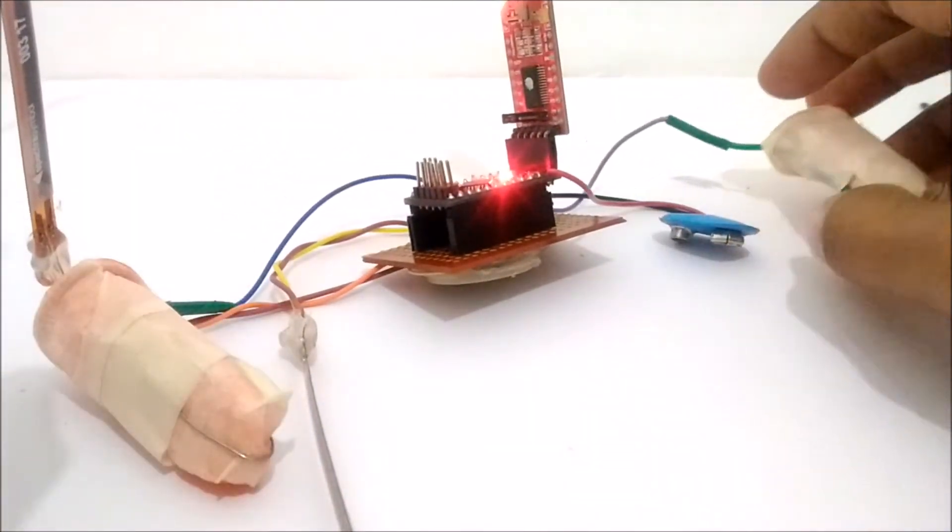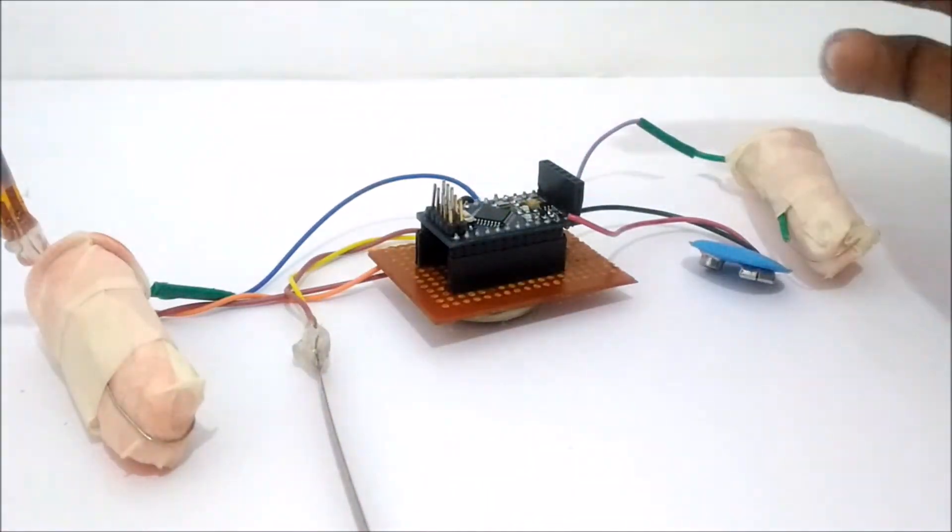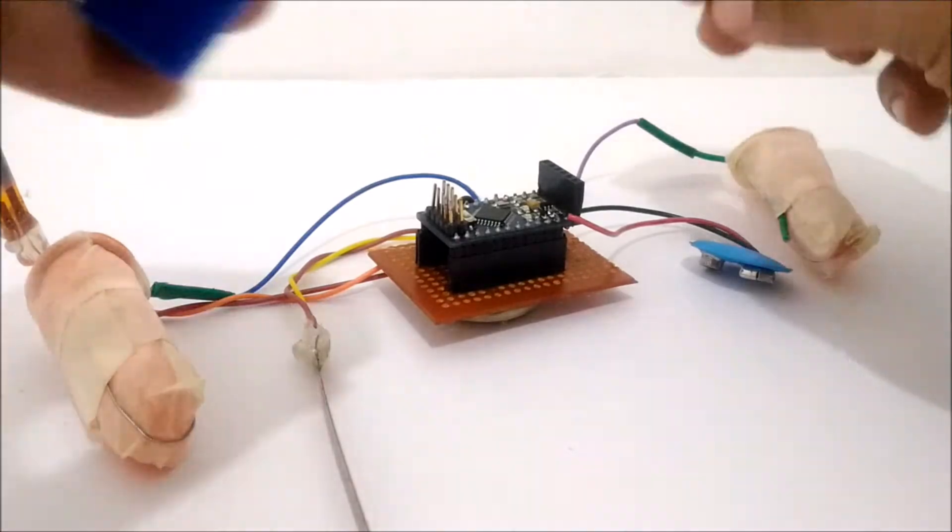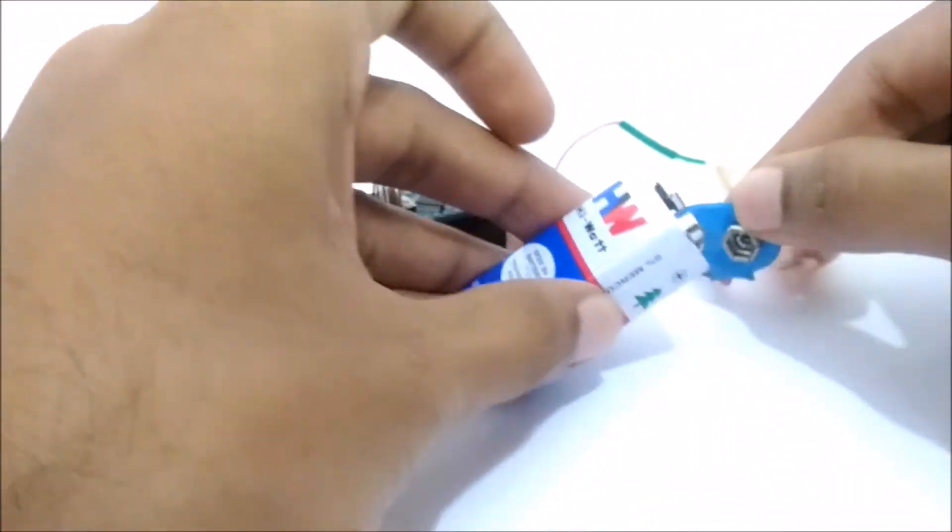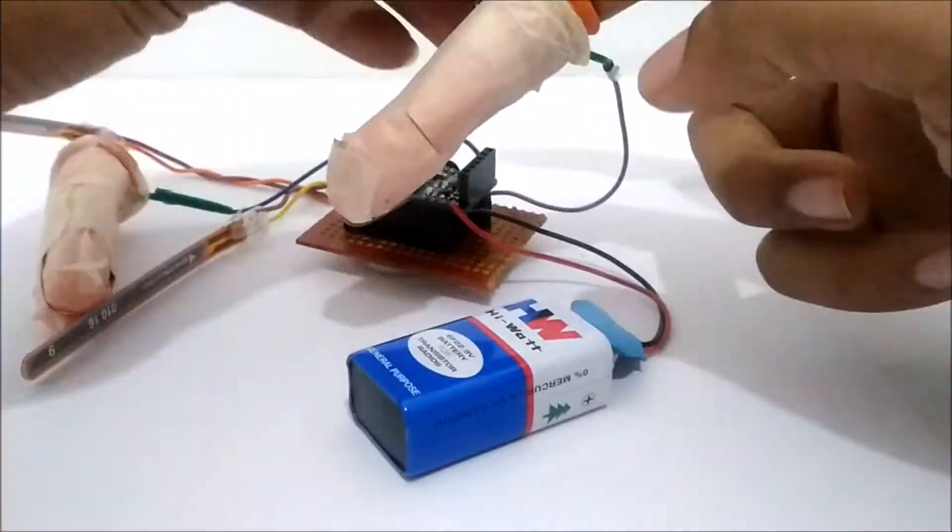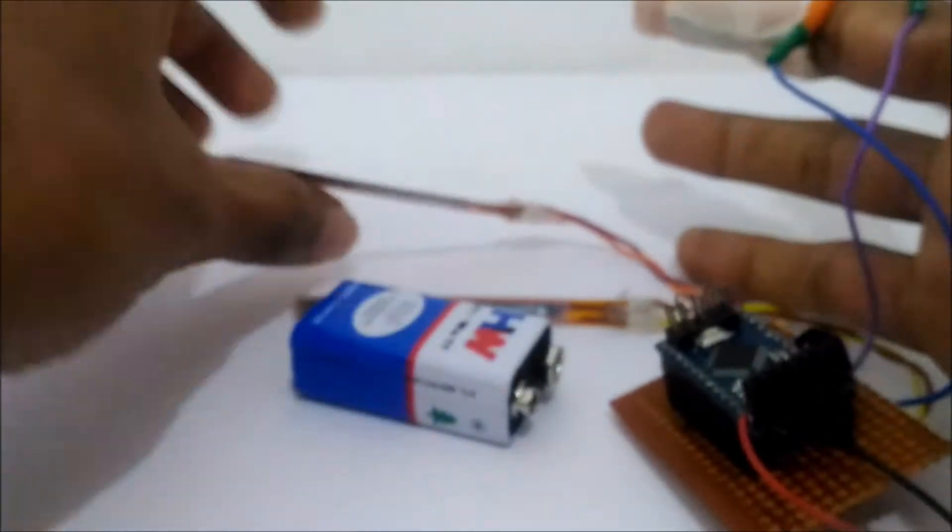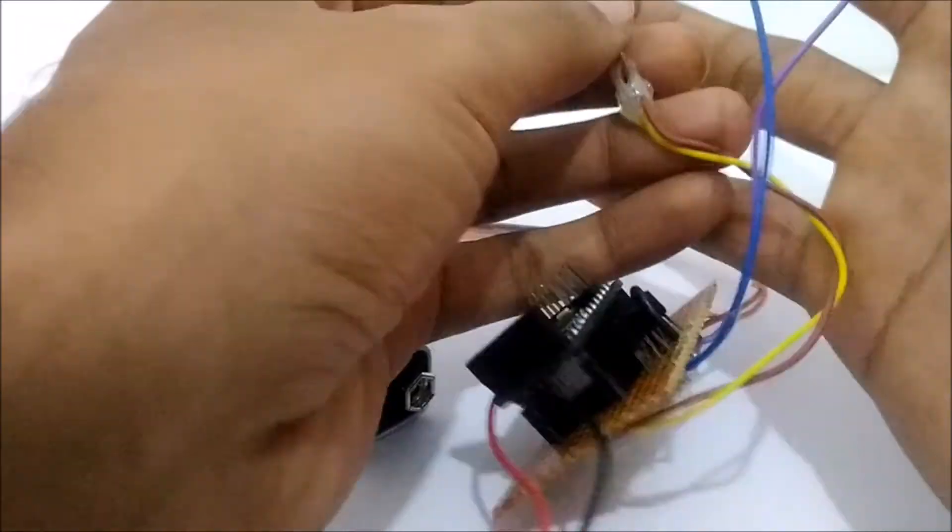So let me use the battery so that everything fits inside my palm. You can simply connect the battery like this. Let me keep this on my fingers first. Once you wear this, you can insert the flex sensors inside.